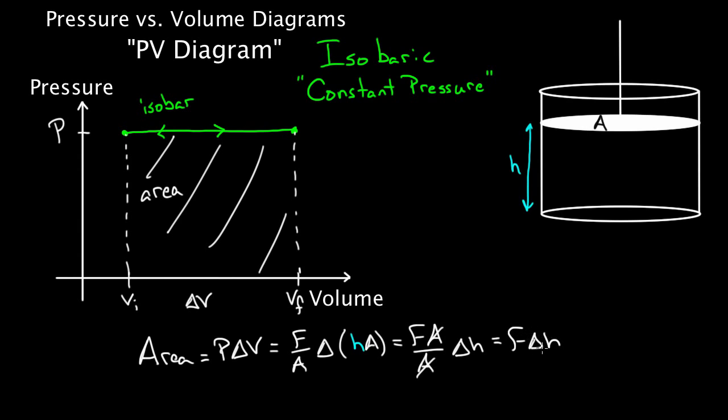Well, the A's cancel and I get F times the change in the height. But look, this is just force times the distance. Times the distance by which this height changes. So delta H will be the amount by which this piston goes up or down. And we know force times the distance by which you apply that force is just the work. So now we know the area under this isobaric process represents the work done either on the gas or by the gas depending on which way you're going. So this area is the work. The value of this area equals the amount of work done on the gas or by the gas.